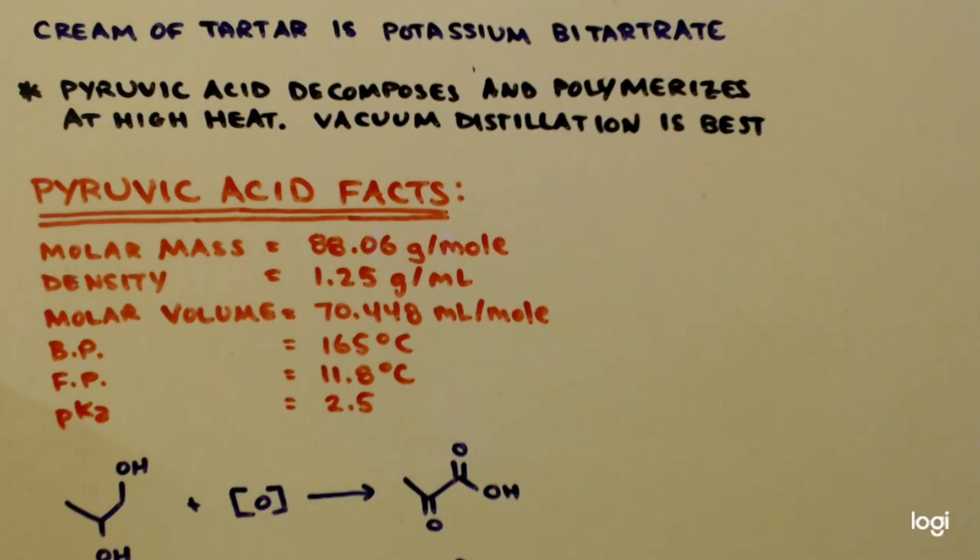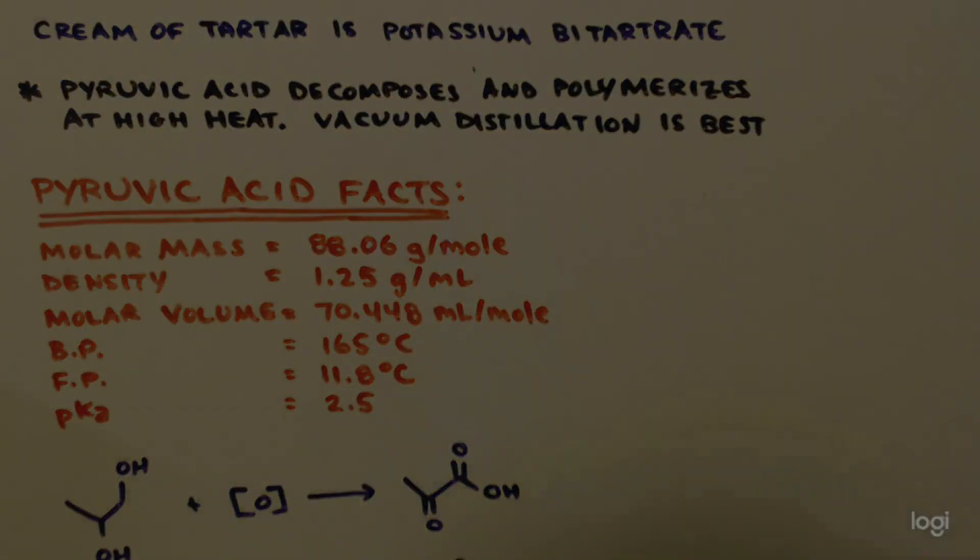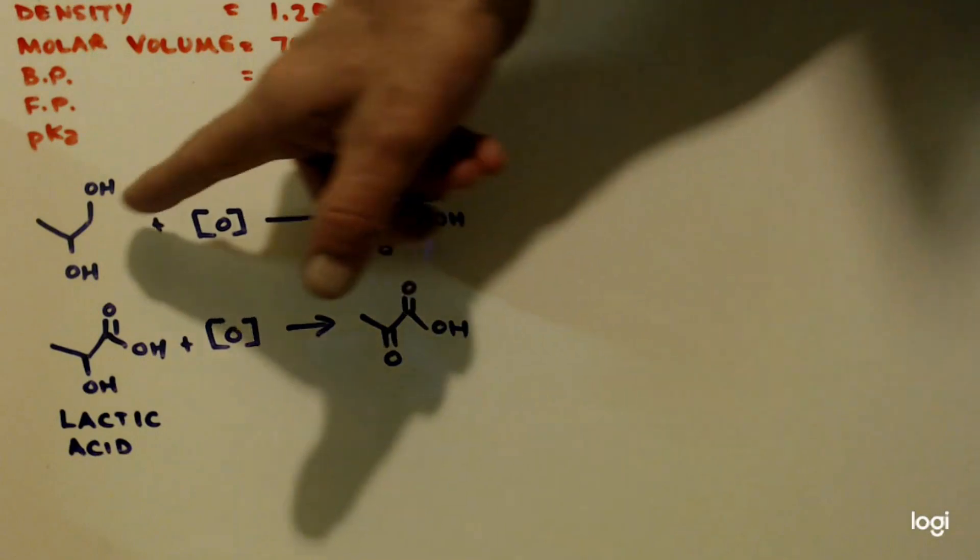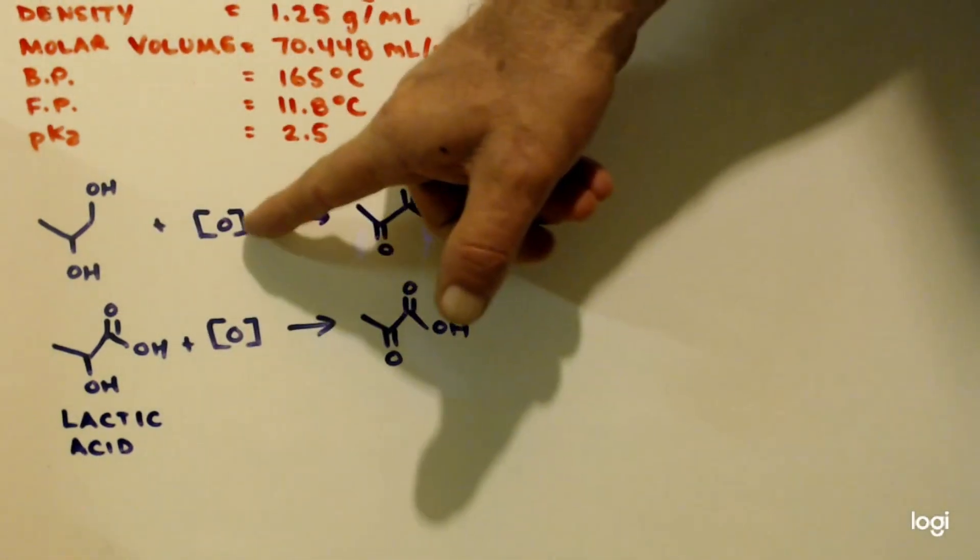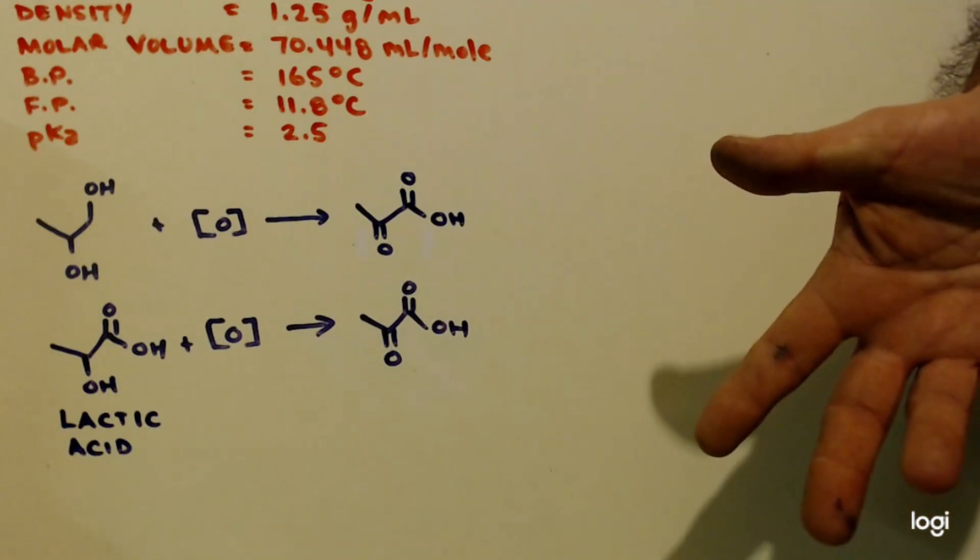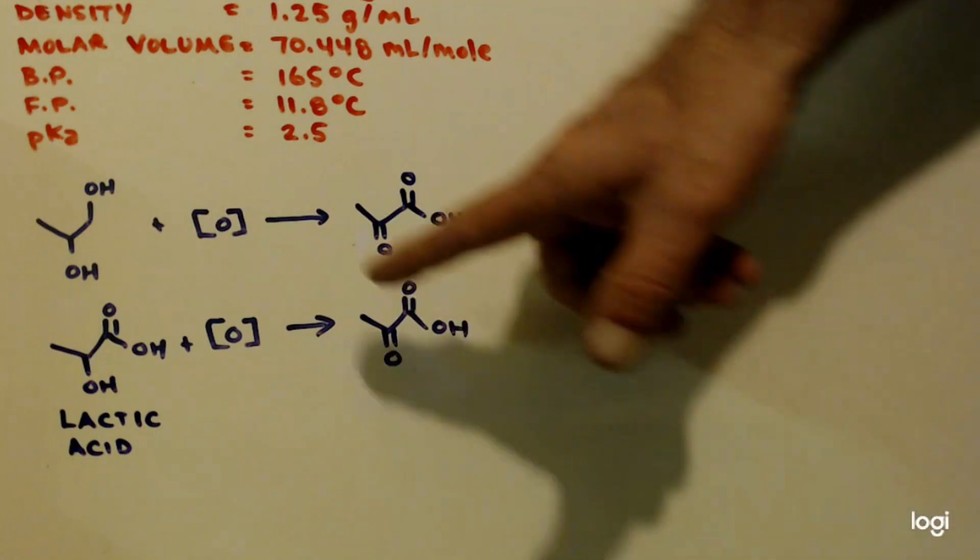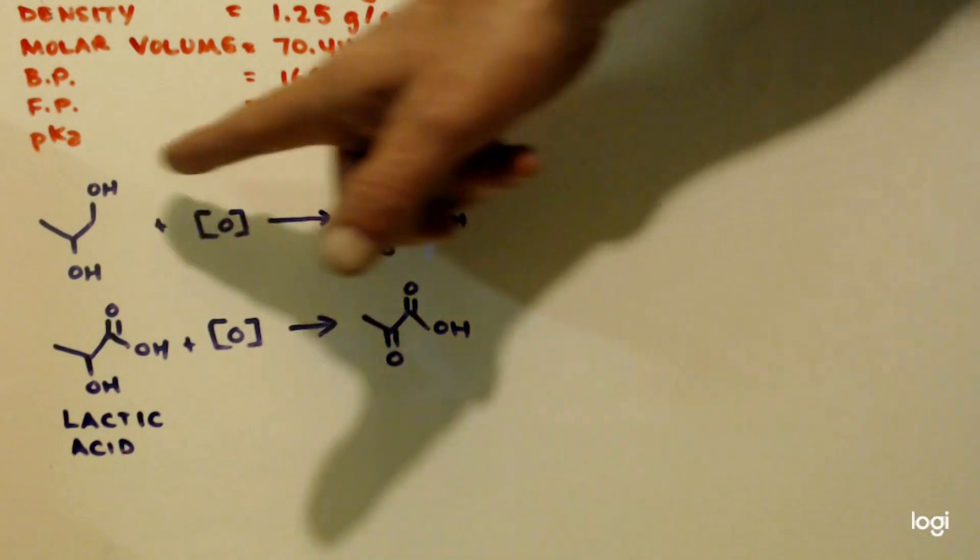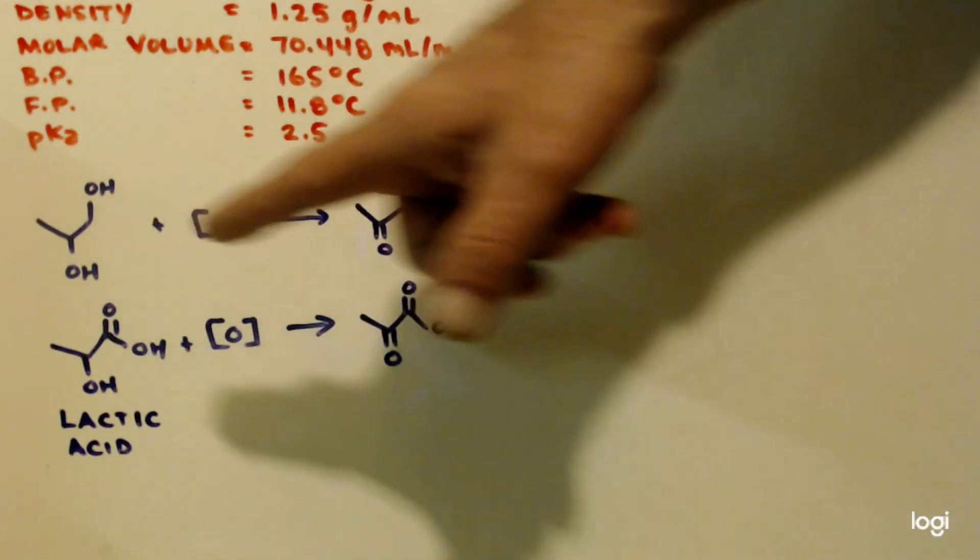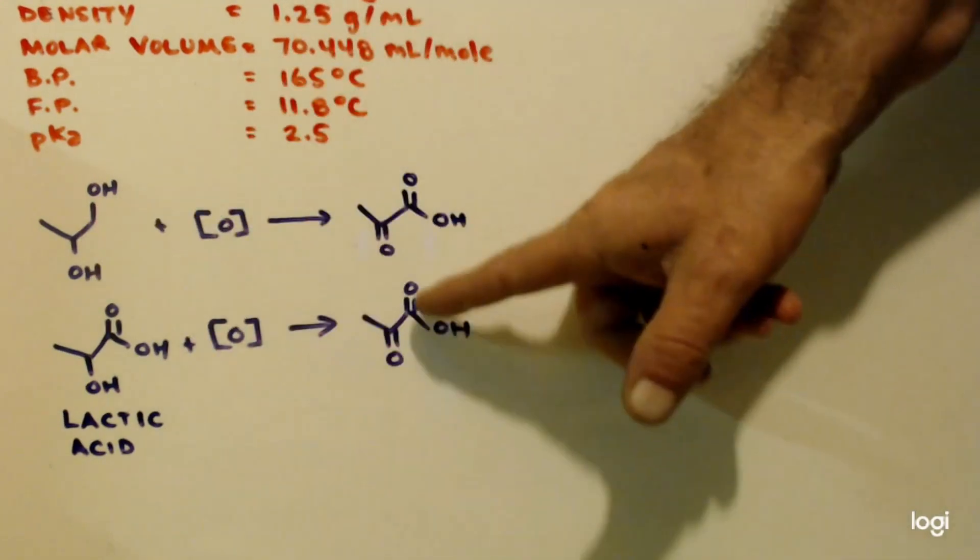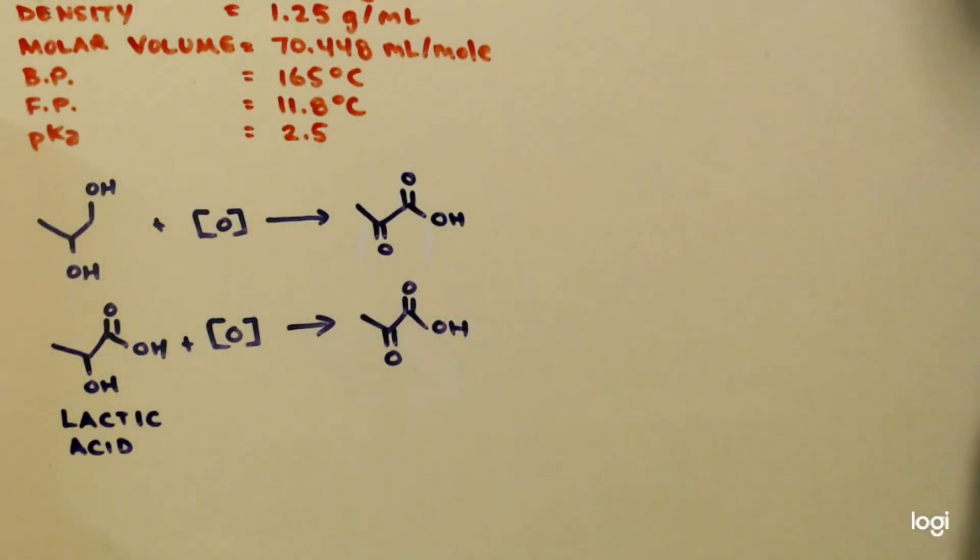And I'm going to go over two more ways how to make pyruvic acid. One is to get this, propylene glycol. It's a diol. And these oils just mean any kind of oxidizer like permanganate or chromic acid, dichromate. Any strong oxidizer. And you will oxidize this because it's a primary alcohol. It will go to the carboxy group. And this secondary alcohol will obviously be a ketone, and you'll make your pyruvic acid.